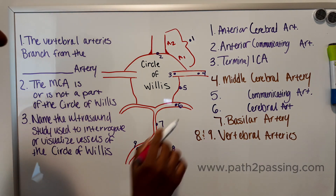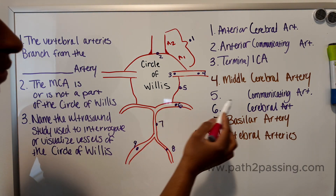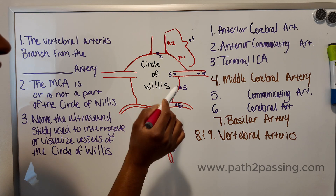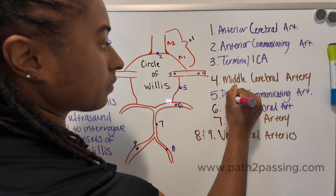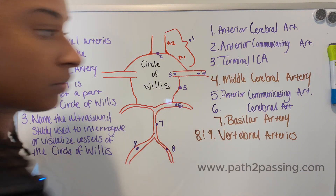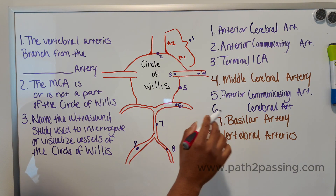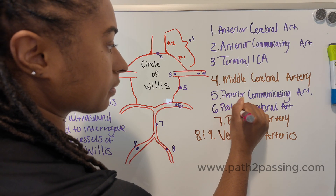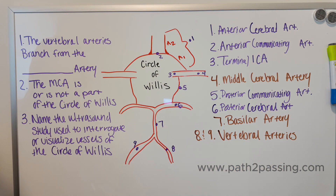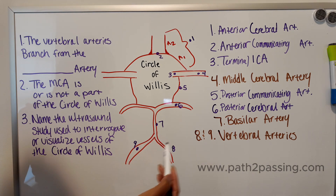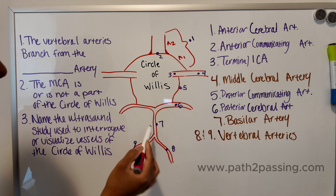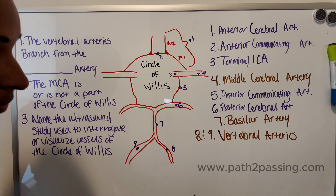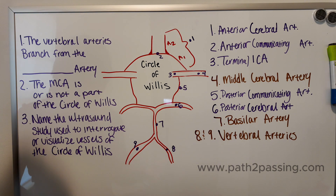Now we get into vessel number five. You are now in the posterior portion — number five is your posterior communicating artery. Number six is your posterior cerebral artery, still posterior. Number seven is your basilar artery. And then you have vessels eight and nine, which are your right and left vertebral arteries.